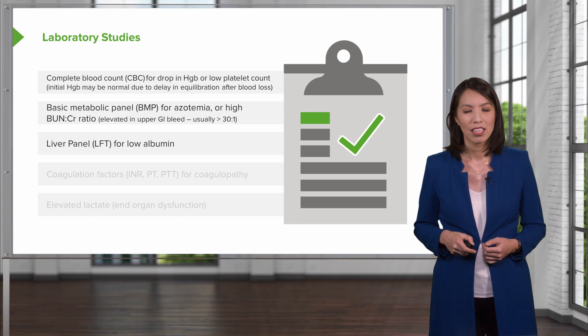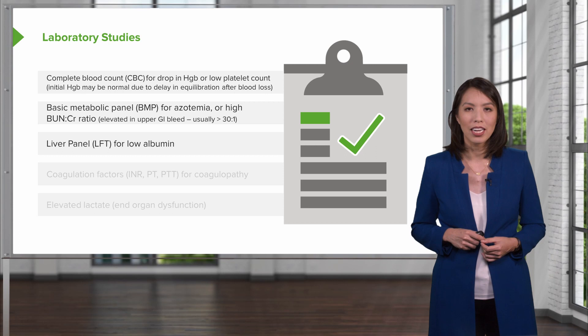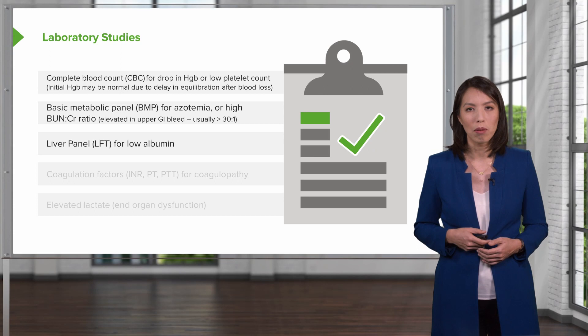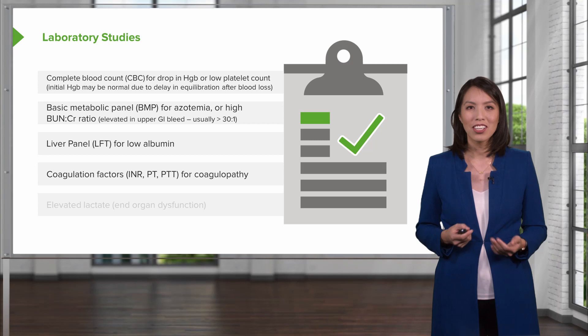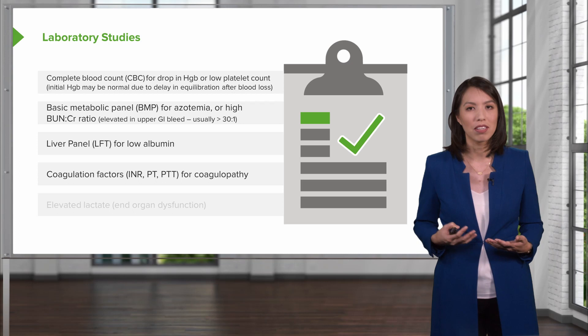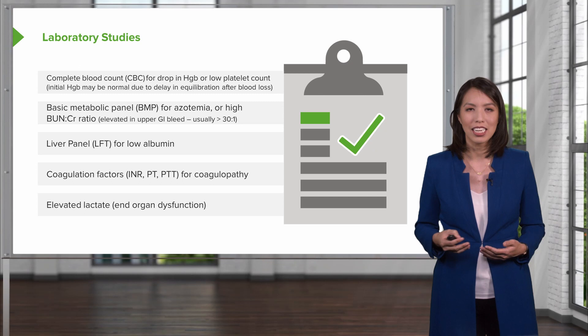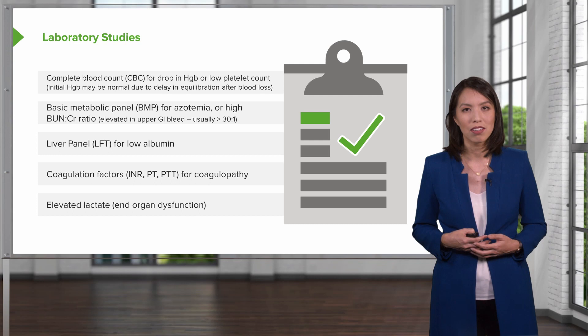Check a liver panel looking for signs of impaired synthetic function — a low albumin may be helpful. Always check coagulation factors for any coagulopathy that might make bleeding harder to control. A lactate can also be checked; an elevated lactate may indicate end-organ dysfunction requiring more aggressive resuscitation.